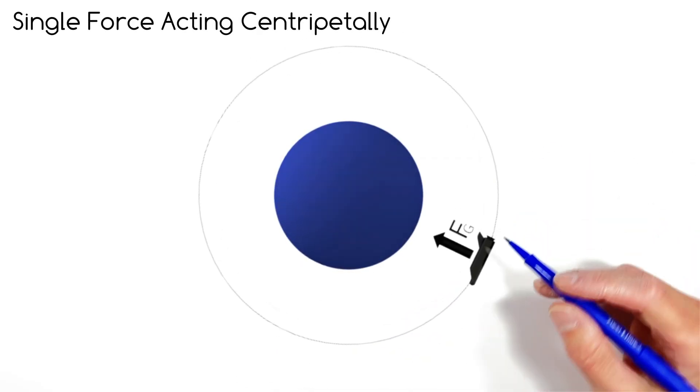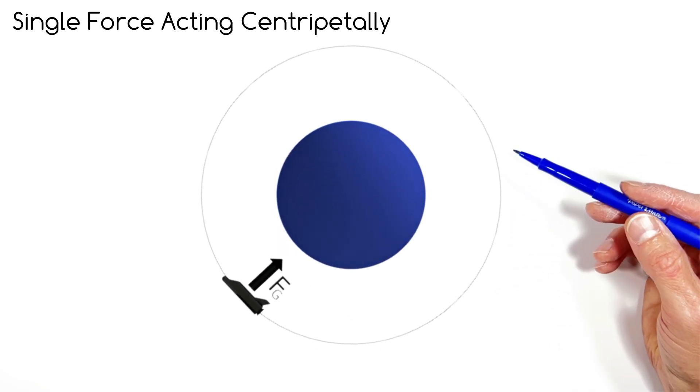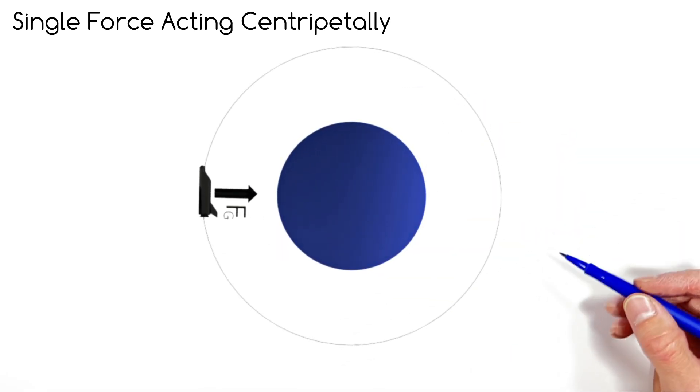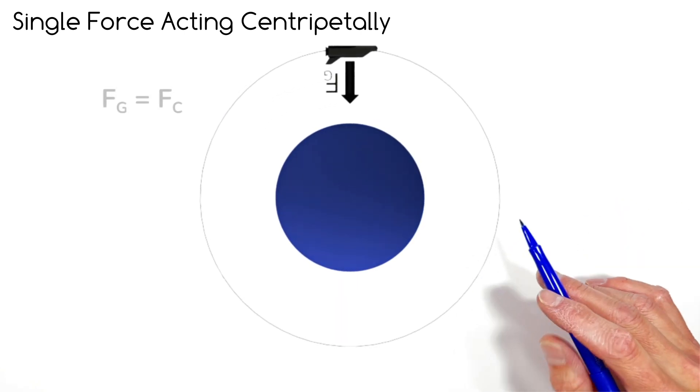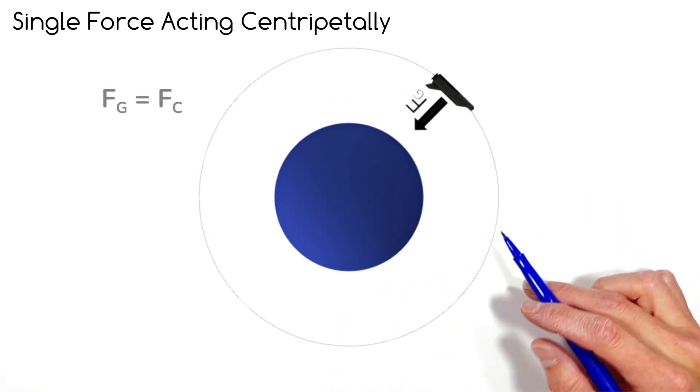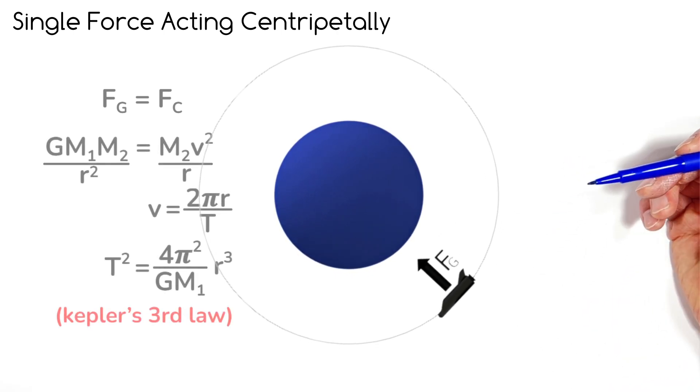If you have a single force causing an object to go in a circle, maybe something like gravity causing a satellite to orbit the Earth, the setup of the problem is typically pretty easy. Here you'd set the force by gravity equal to the centripetal force, and then you'd solve for whatever your teacher or homework are demanding of you.